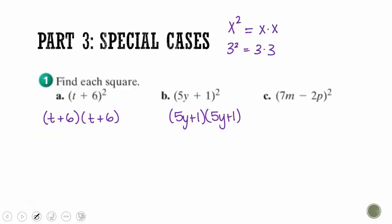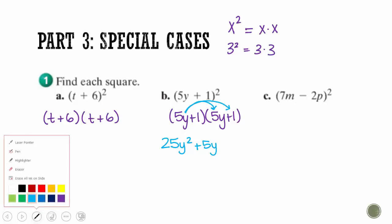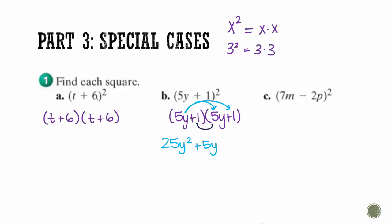Let's do the example (5y + 1)² together. 5y times 5y gives me 25y squared. 5y times 1 gives me 5y. Then distributing the 1: another 5y, and then 1. Combining the like terms in the middle gives us our final answer.